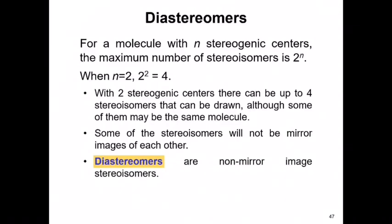There's a second class of stereoisomers known as diastereomers. Diastereomers are molecules containing at least two stereogenic centers, or chiral centers, with a maximum number of stereoisomers equivalent to two raised to the nth power, where n is the number of chiral centers or stereogenic centers.